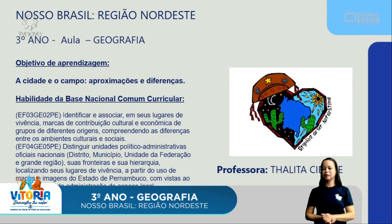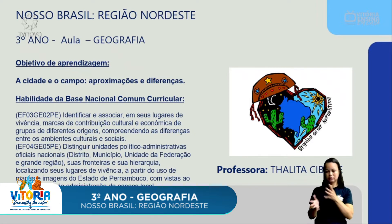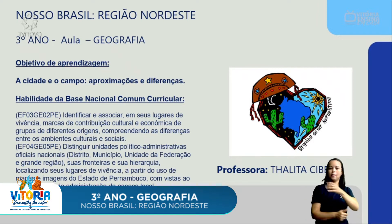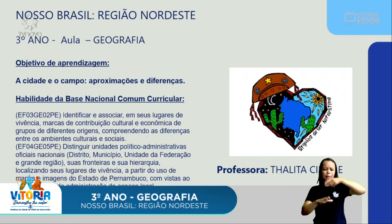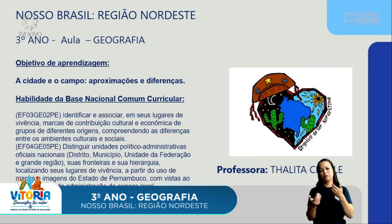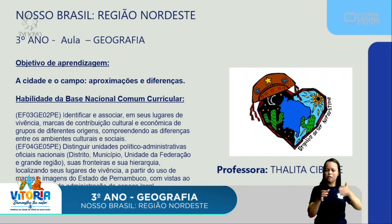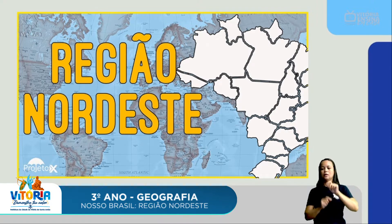Olha aqui, nossa aula, nosso Brasil, região Nordeste, para ser mais específico. Ano que vem, quando todo mundo aqui do terceiro ano estiver no quarto ano, vamos aprender mais a fundo sobre cada região do nosso Brasil. Mas hoje nós vamos evidenciar a nossa terrinha, o nosso querido Nordeste brasileiro. Vamos identificar e associar alguns lugares, alguns climas, alguns relevos, e vamos ver algumas características bem próprias da nossa região. Vem cá comigo aprender um pouco.